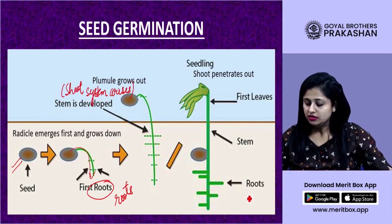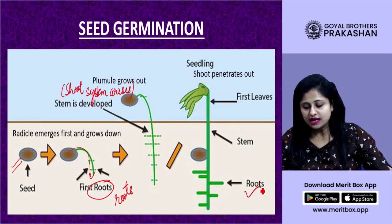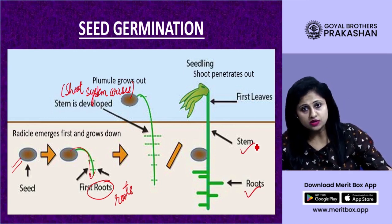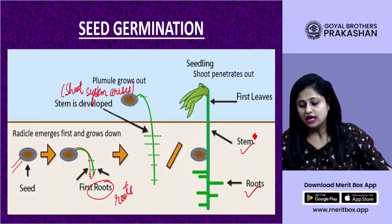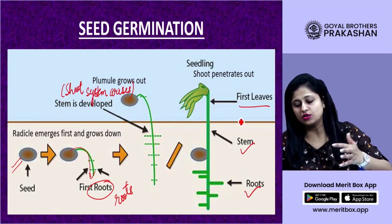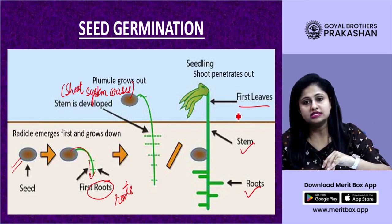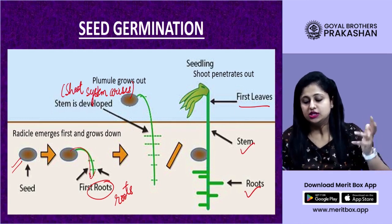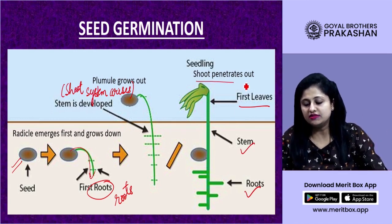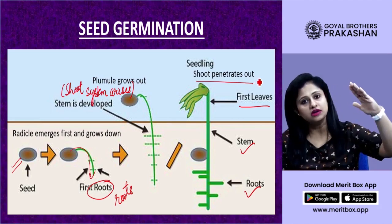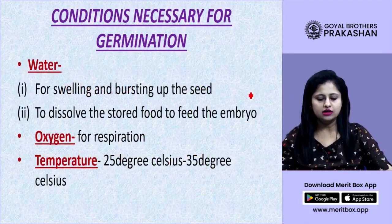With roots present and stem established, the first leaves arise and start appearing above the ground as the shoot penetrates above the soil.